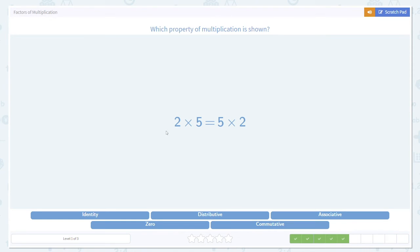Here we see it again. 2 times 5. 5 times 2. It's the same numbers in a different order. That's the commutative property.